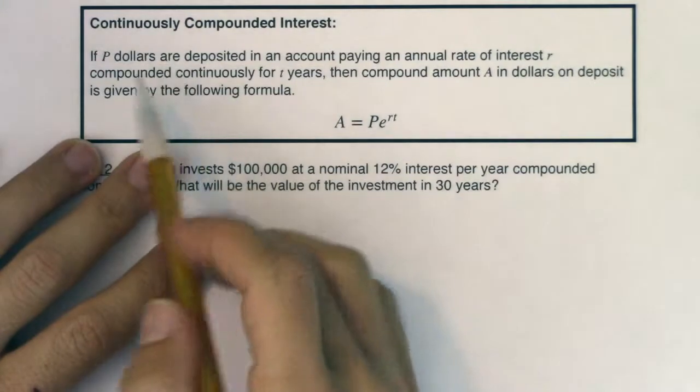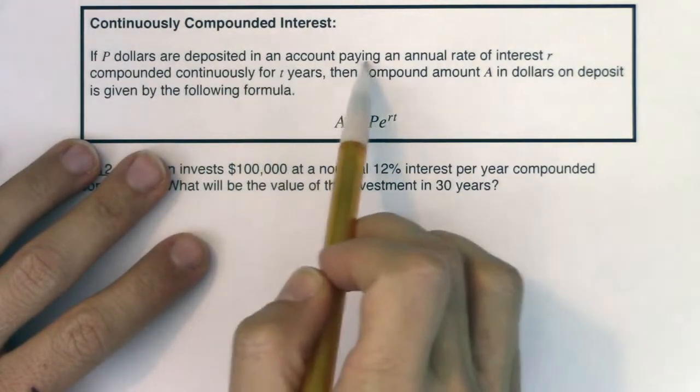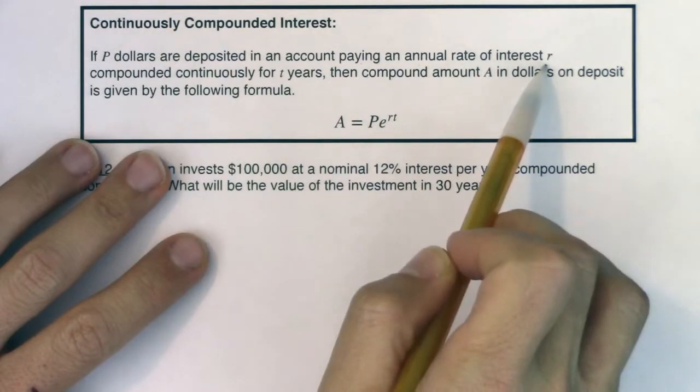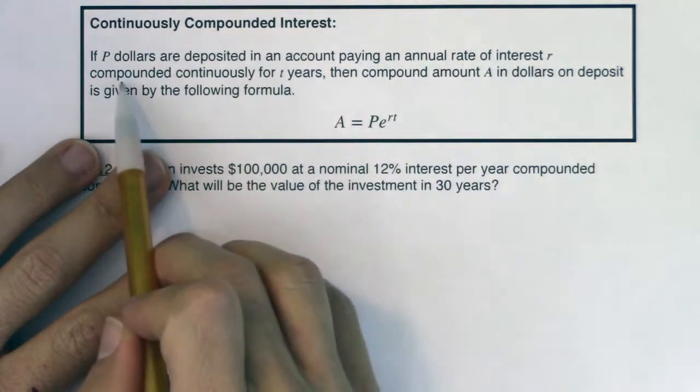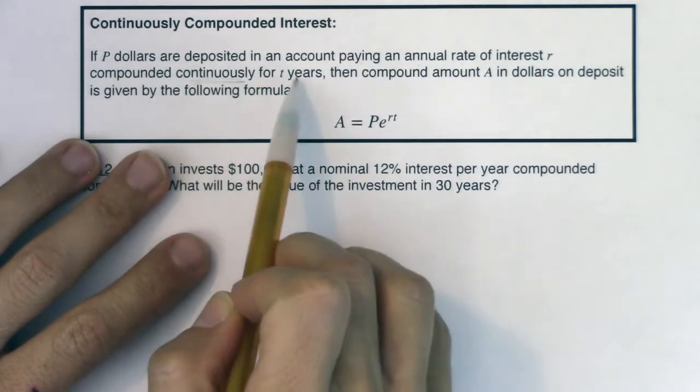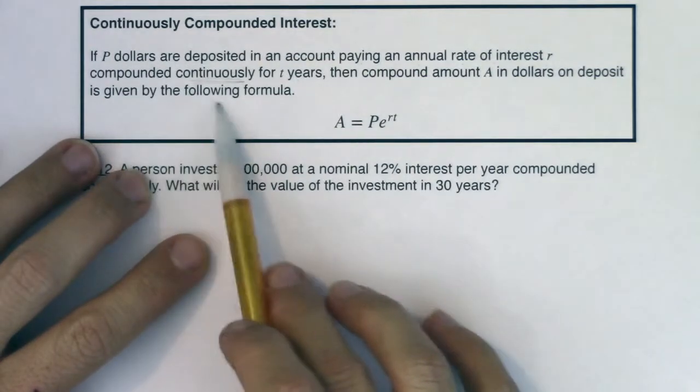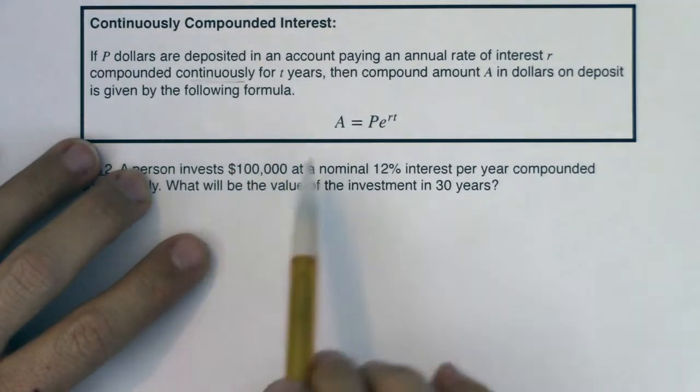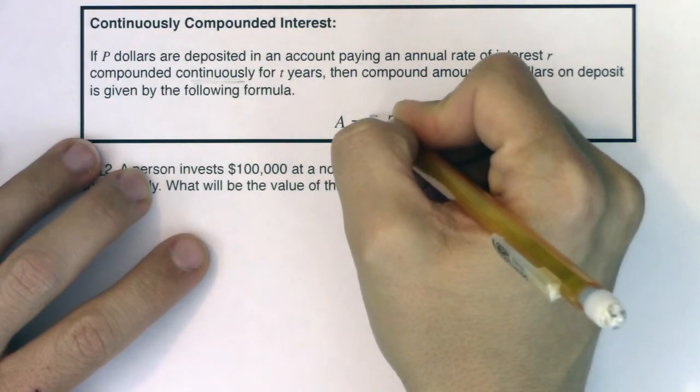Let's look at the setup. If P dollars are deposited in an account paying an annual interest rate r compounded continuously for t years, then the compound amount A in dollars on the deposit is given by the following formula. So we have A is our current amount, P is our initial investment.